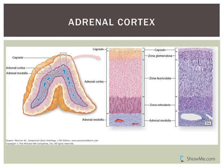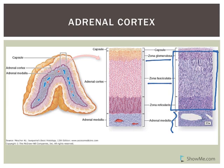Now let's talk about the adrenal cortex — the outer region of the adrenal glands. You have a capsule and then three major regions: the zona glomerulosa, the zona fasciculata, and the zona reticularis — ZG, ZF, and ZR. Each of them produces a major hormone or hormones.